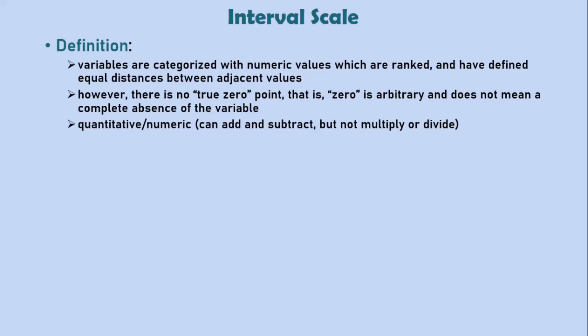You cannot find ratios between two values. That is, you cannot multiply or divide values on an interval scale. This is because there isn't a common reference or starting point. Let's look at the example of temperature measured in degrees Celsius.